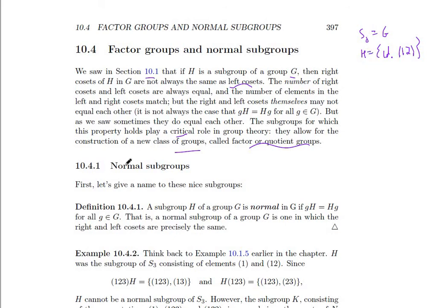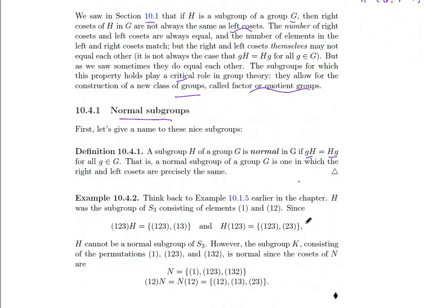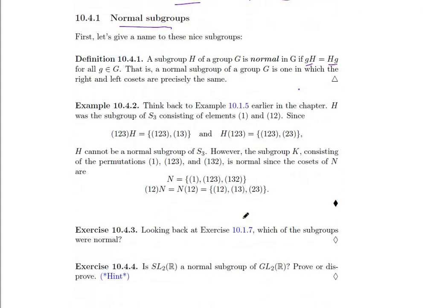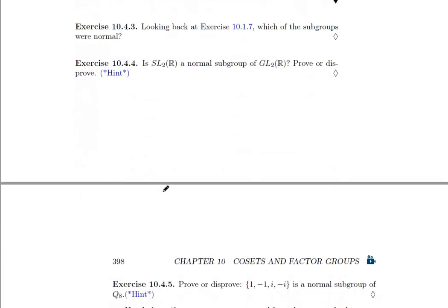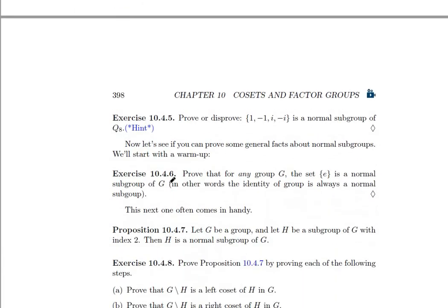Okay, so let's go on with that idea. We're going to define normal subgroups. A subgroup of group G is normal if all the left cosets are also right cosets. Alright, so we can go through examples. We had one case where it wasn't normal. Okay, and have some exercises to determine whether things are normal.